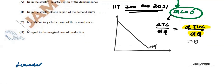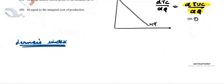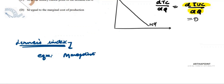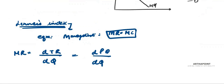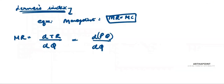Now when we understand the Lerner's Index, we know that at equilibrium the monopolist achieves profit maximization when MR is equal to MC. MR is how revenue changes when output changes. Total revenue is price times quantity.